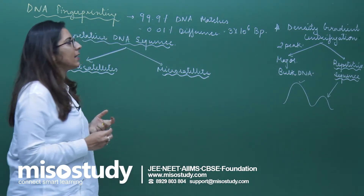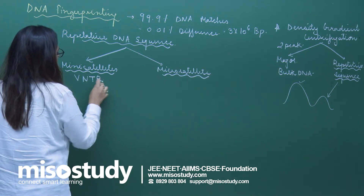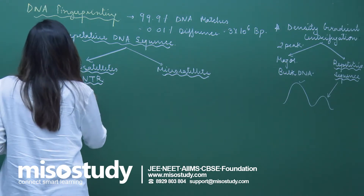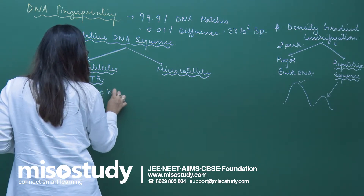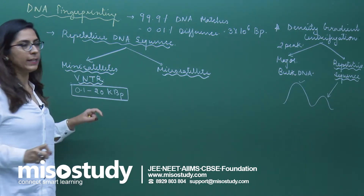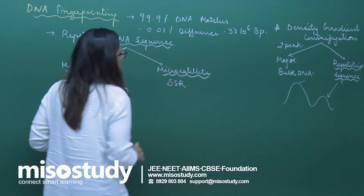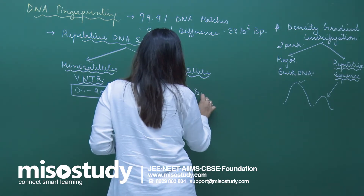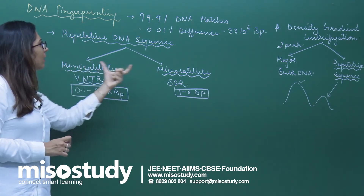Mini satellites are also termed VNTR — Variable Number Tandem Repeats. These vary from 0.1 to 20 kilobase pairs. Micro satellites are also termed SSR — Short Sequence Repeats — and vary from 1 to 6 base pairs.